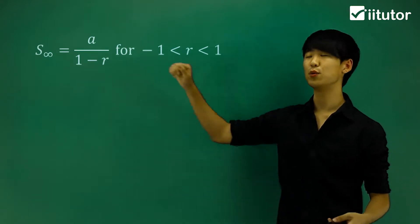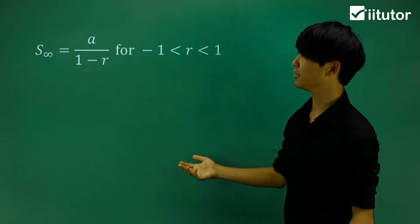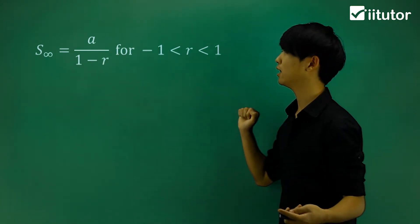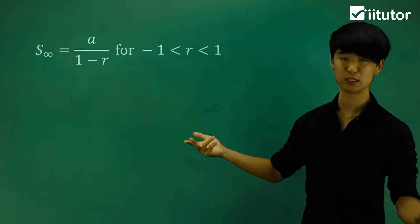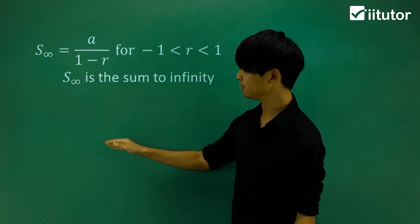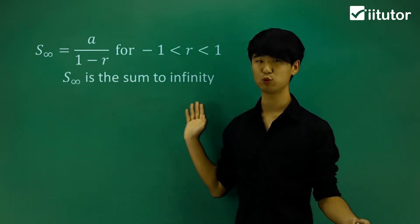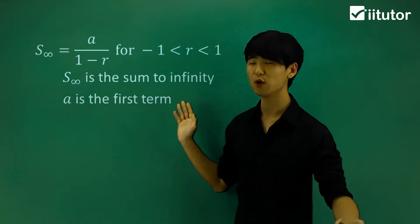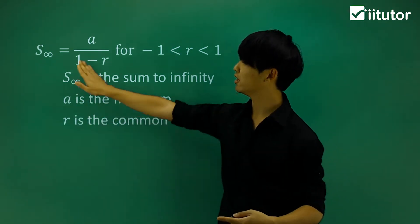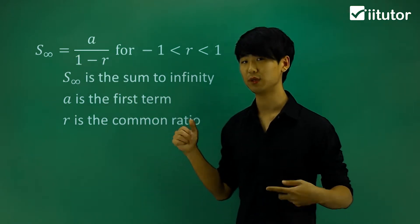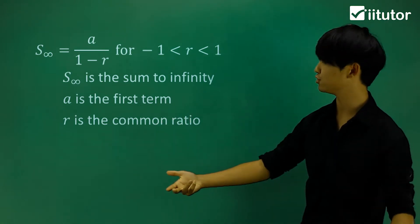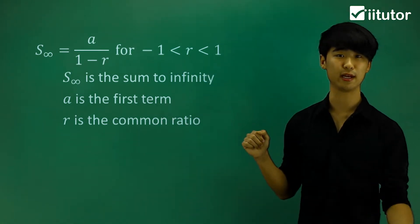There's a formula for that. So we have S, which is the sum. Sum to infinity is this formula: a over 1 minus r. And it says that for when r is in between negative 1 and 1. Sum to infinity, with a subscript infinity, is a sum to infinity. A is the first term and r is my common ratio. So this is the important formula that we need to know, and also the fact that my common ratio in the geometric series needs to be in between the value of negative 1 and 1.